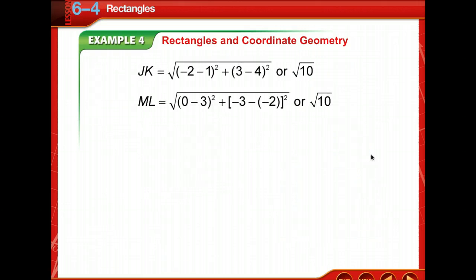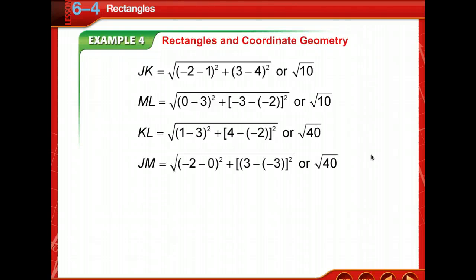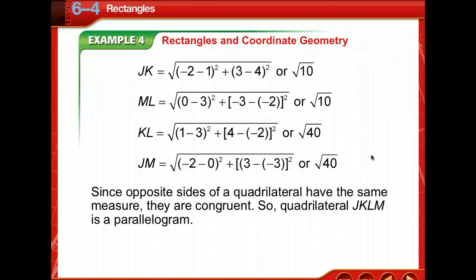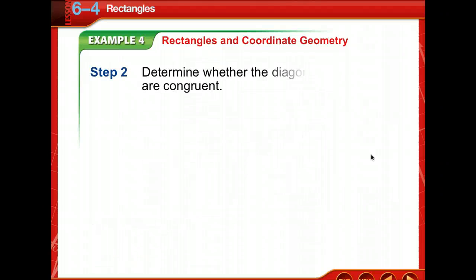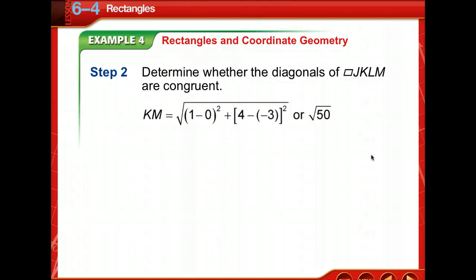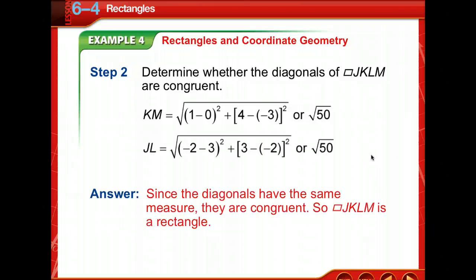Using the distance formula, we see JK and ML have the same distance, and KL and JM also have the same distance. Since opposite sides of this quadrilateral have the same measure, they are congruent, so JKLM is a parallelogram. Now let's determine whether the diagonals are congruent. KM is the square root of 50 and so is JL. Since the diagonals have the same measure, they are congruent, so parallelogram JKLM is a rectangle.